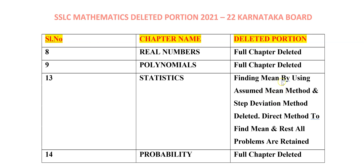In the deleted portion, what they have suggested is: finding Mean by using Assumed Mean Method and Step Deviation Method — these topics are deleted. So in the exam, if they ask you to find Mean, they will ask by using Direct Method only. You are not going to solve by Assumed Mean Method and Step Deviation Method, and they will not give questions based on these methods.